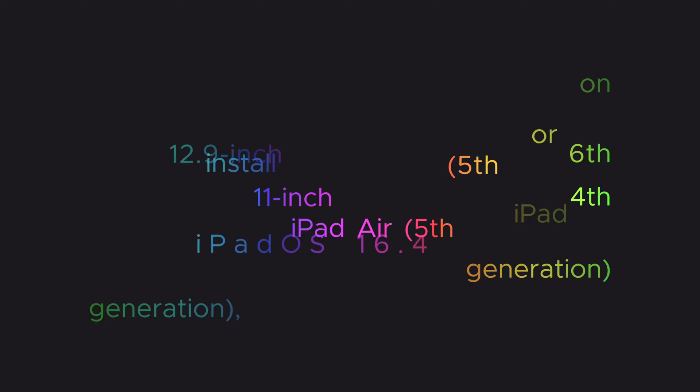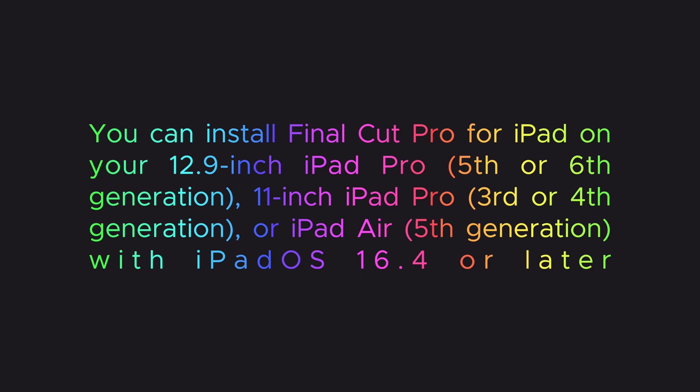Let's talk system requirements. You can install Final Cut Pro for iPad on your 12.9 inch iPad Pro 5th or 6th generation, the 11 inch iPad Pro 3rd or 4th generation, or iPad Air 5th generation with iOS 16.4 or later. The first thing to know is that the terminology is a little bit different. Instead of libraries, those are now referred to as projects, and instead of projects, they are now referred to as timelines.